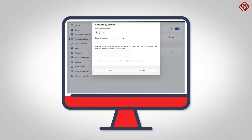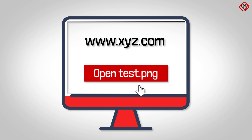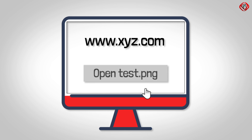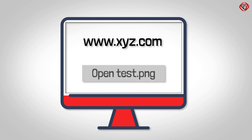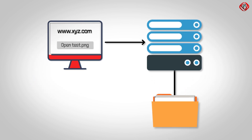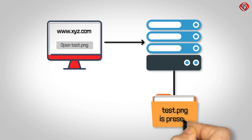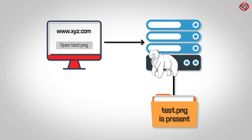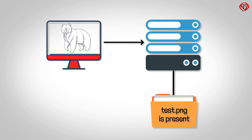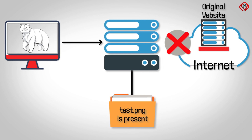When you set up your web browser to use a proxy server or a web cache, every time you request something from the internet, your request first goes to the proxy server. If the proxy server already has a copy of what you are asking for, it sends it to you directly, making browsing faster because it does not need to get the file from the original website again.